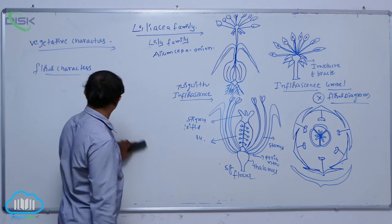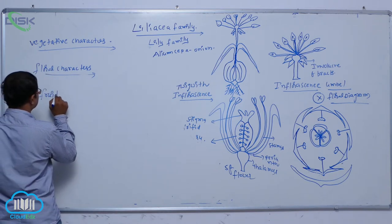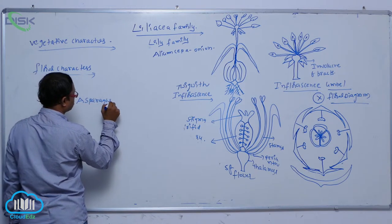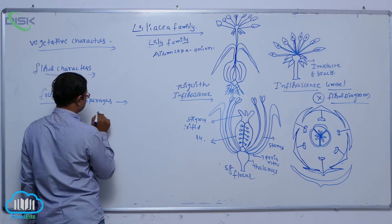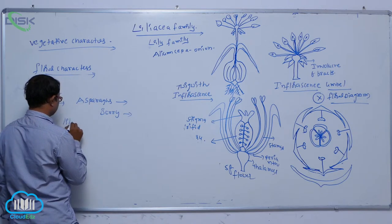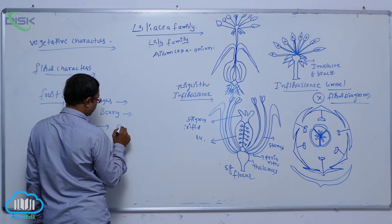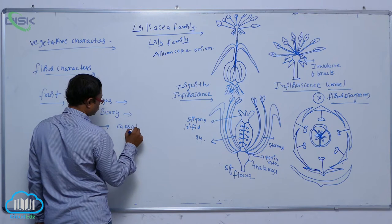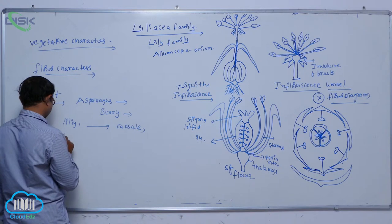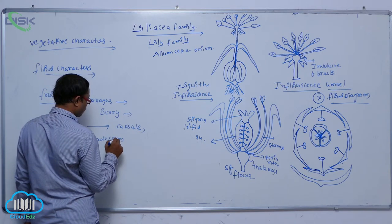After the gynoecium — fruit. Generally in asparagus, fruit is a berry. But in lily, in Allium sativum, fruit is a capsule. After fruit — seed. Generally seed is endospermic; endosperm is present.